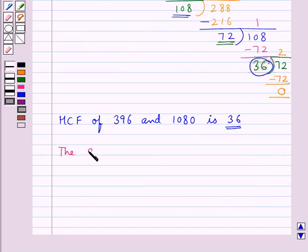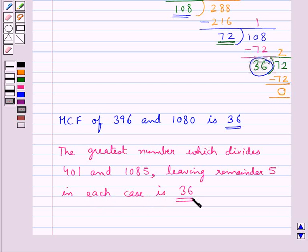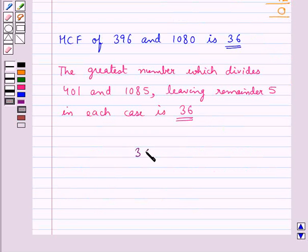The greatest number which divides 401 and 1085 leaving remainder 5 in each case is 36. So 36 is our final answer.